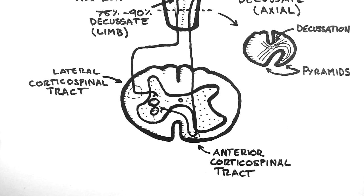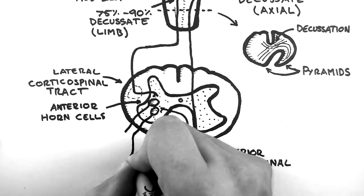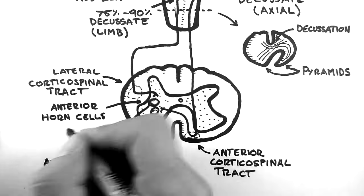These neurons in the anterior horn, which are intuitively called anterior horn cells, then project to the limb muscles and to the axial muscles.